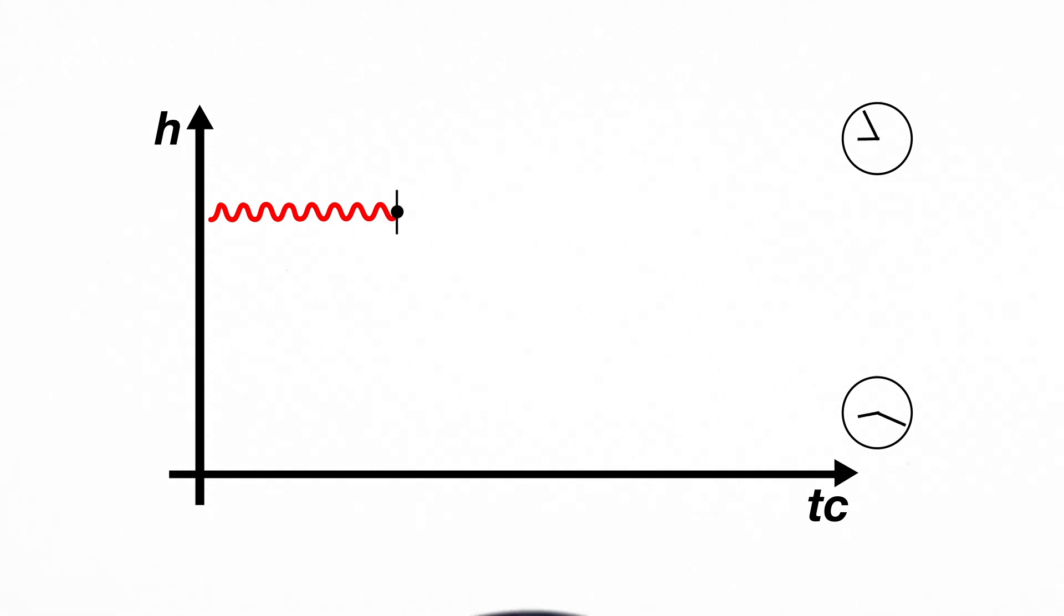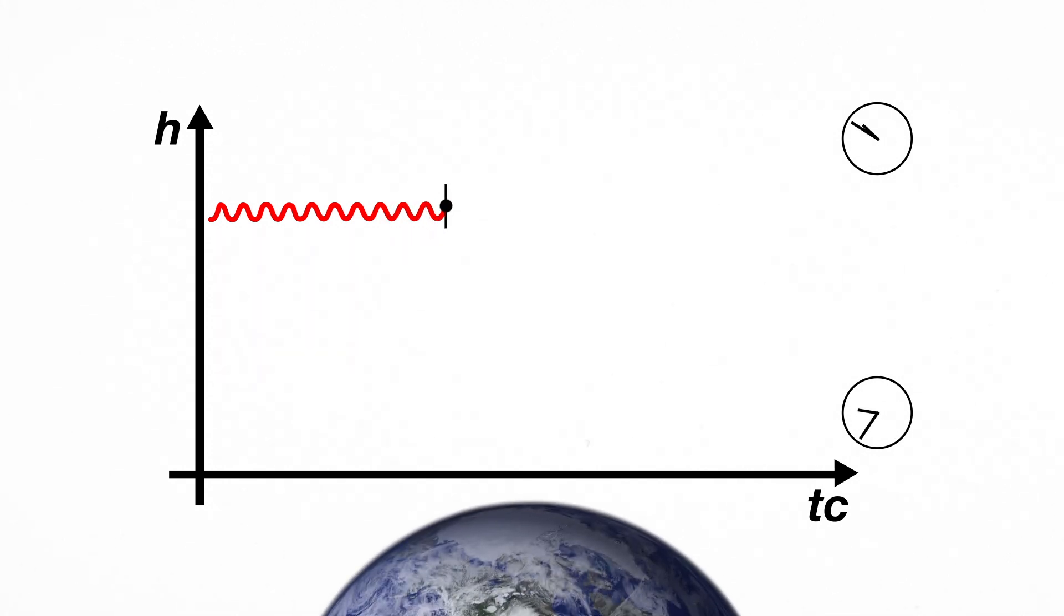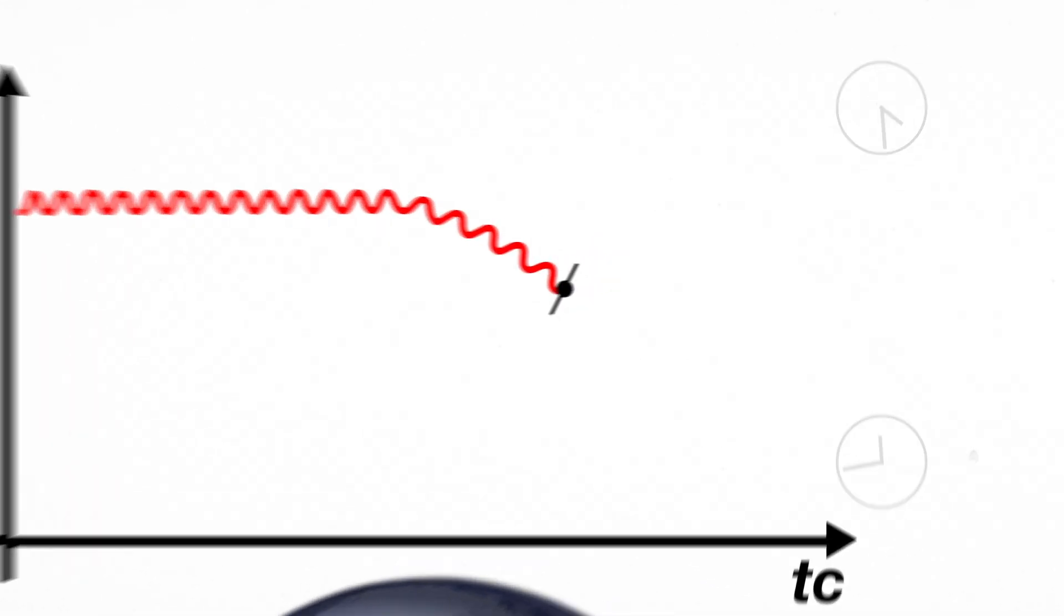Now let's add a large mass, the Earth. Time slows down closer to the surface of a large mass. So the bottom portion of the particle's wavefront moves slower than the top portion, causing the whole wave to turn.